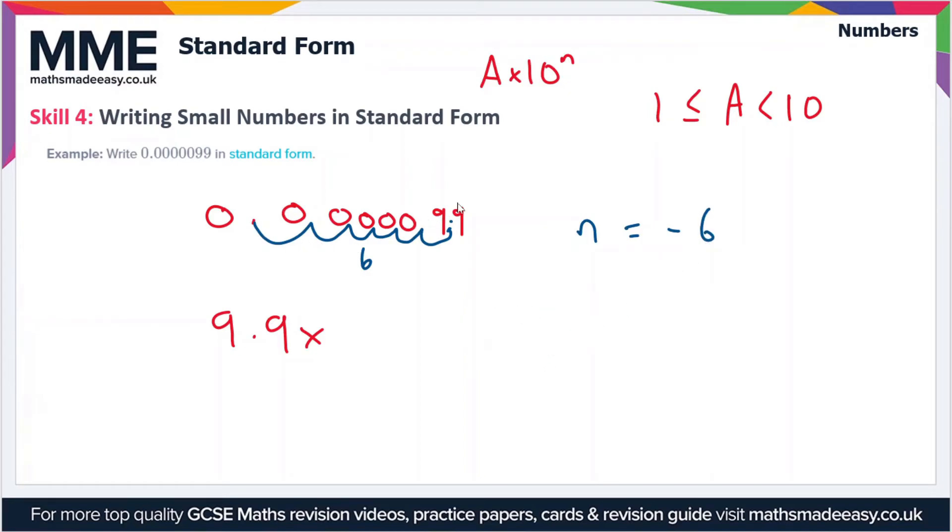This is because we're moving the decimal place to the right rather than the left. So our value in standard form is 9.9 times 10 to the minus 6.